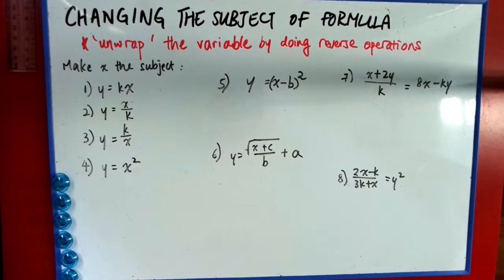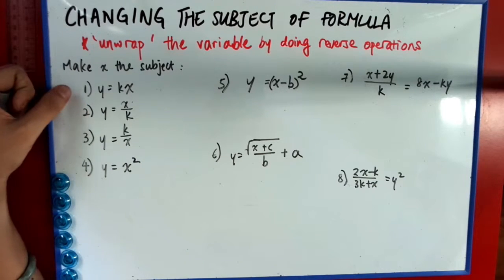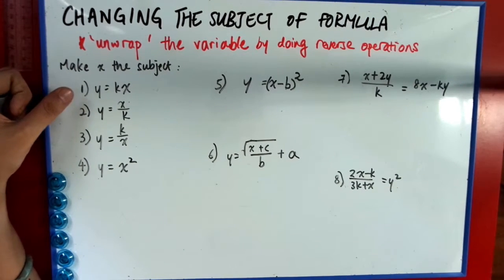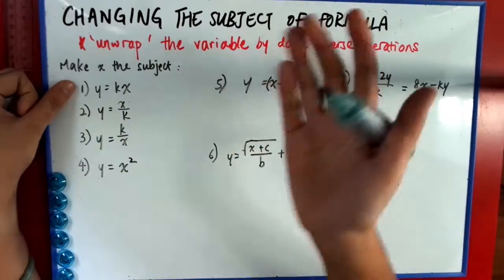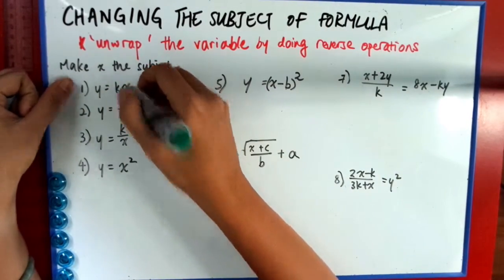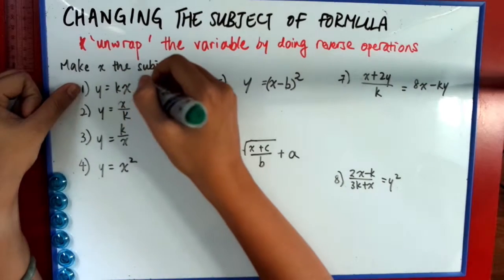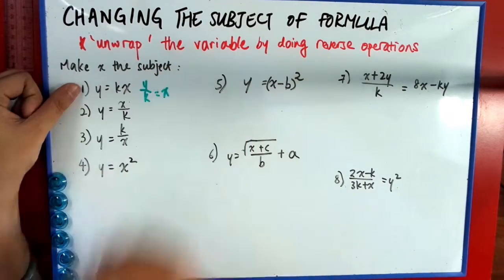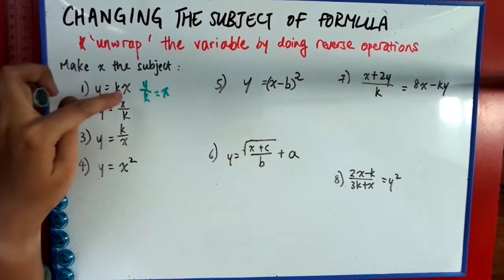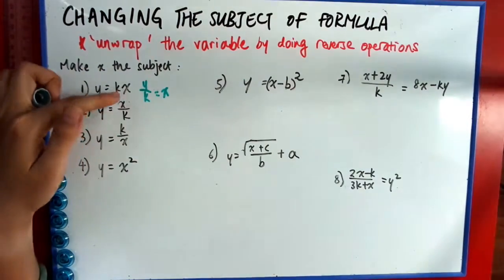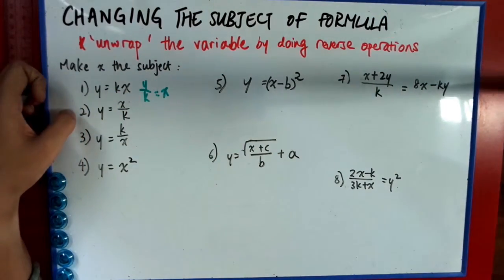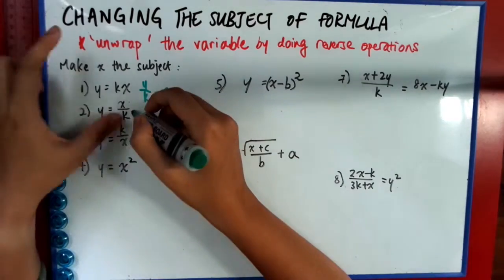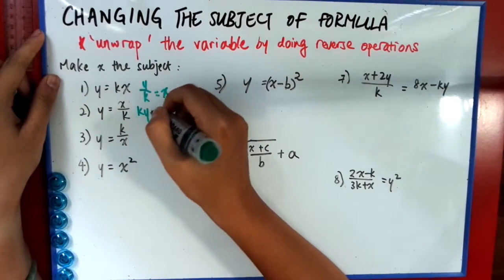So I will show some examples. 1, 2, 3, 4 are just simple examples. So to make x the subject, for example, if I have y equals kx, what I should do is just divide by k. So I will get y over k equals x. Because once I divide by k on both sides, I would be able to isolate x.